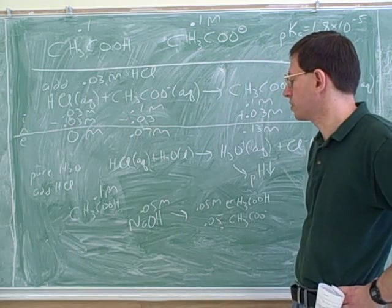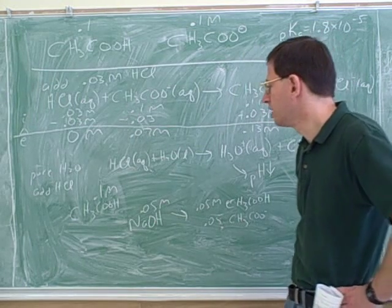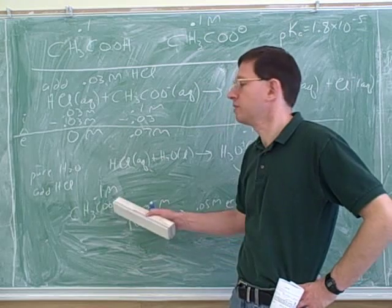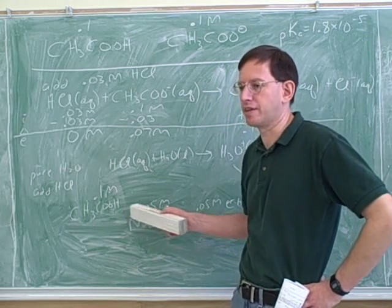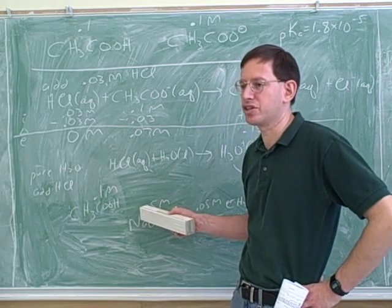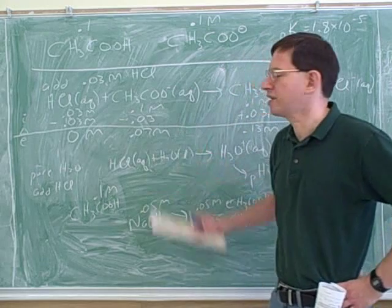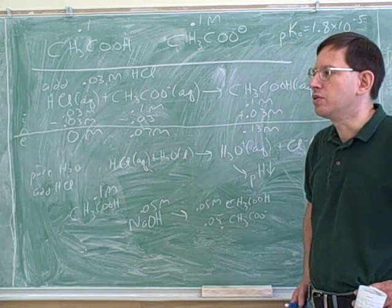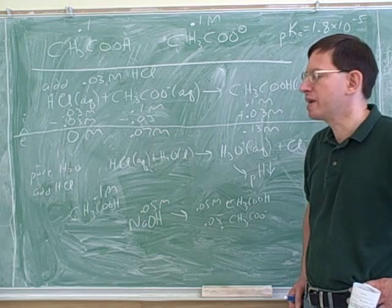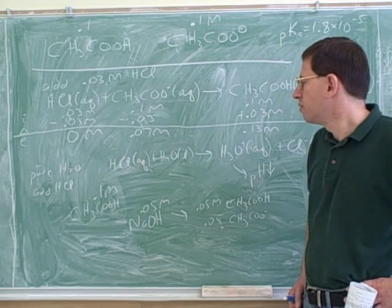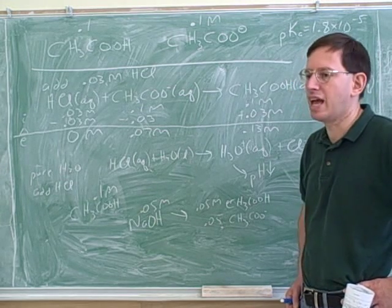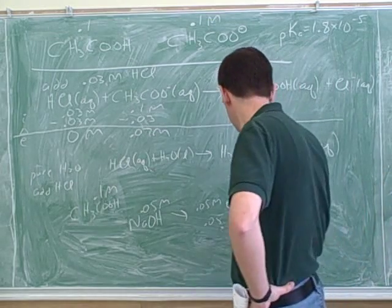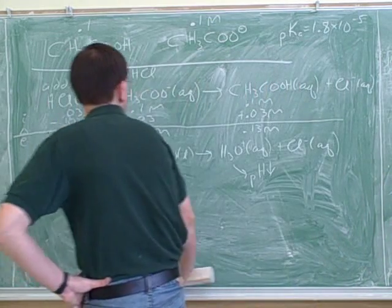This is actually a good point when solving problems. This is a situation where you would use the Henderson-Hasselbalch equation to find the ultimate pH — you use it when you end up with a mixture of both the weak acid and the weak base. That's when you have a buffer solution.